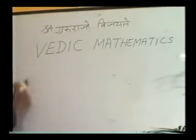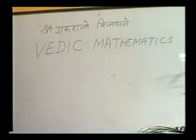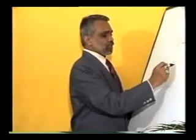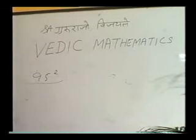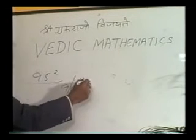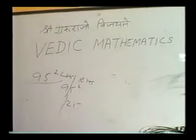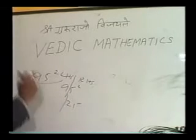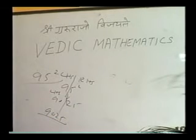Now let us take the sutra 'Ekadikeyna Purvena' in a special case of multiplication. Take 95 squared — that is 95 into 95. It would take at least 2 to 4 minutes to multiply conventionally. In Vedic Mathematics we divide the answer into two parts: LHS and RHS. 5 into 5 is always 25 — that is the RHS answer. Then, one more than 9 is 10; 10 multiplied by 9 is 90 — that is the LHS answer. Remove the slash and 9025 is the answer, straight away.